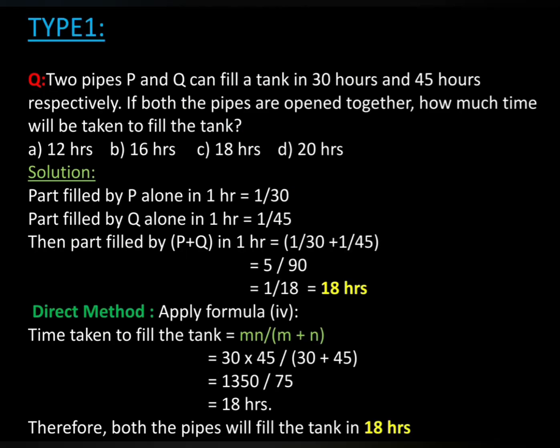Type one question: Two pipes P and Q can fill a tank in 30 hours and 45 hours respectively. If both the pipes are opened together, how much time will be taken to fill the tank? Options: 12 hours, 16 hours, 18 hours, and 20 hours.